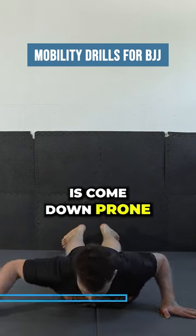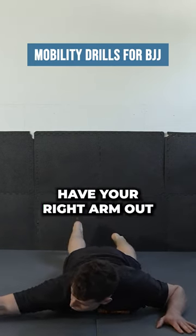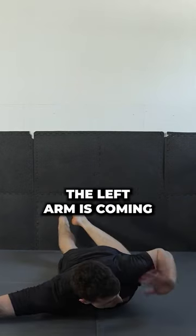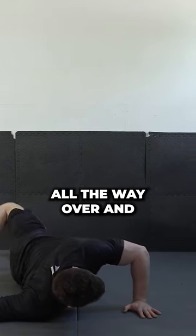What we're going to do is come down prone onto your belly. We're going to start by going to the right side. So have your right arm out. The left arm is coming to the mat and using it to push you all the way over.